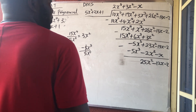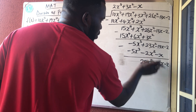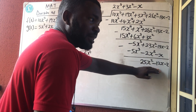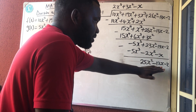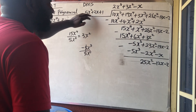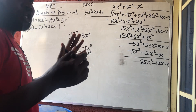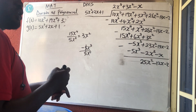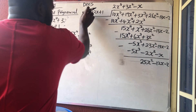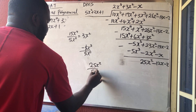Once you're done with subtraction, what you're getting is the remainder. Check: is this remainder still greater than or equal to the divisor? The highest power here is x² and the highest power of the divisor is also x² — they are equal, so we still continue DMS again.